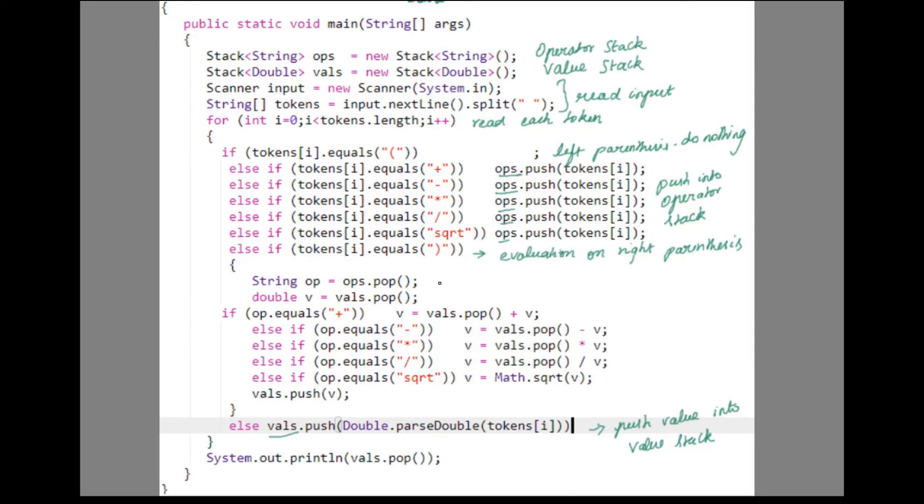In order to evaluate, pop the recent operator. Then you need the values. First pop just one value and store it in the variable v. Then you should have a switch logic or an else if ladder. Because you have to perform a corresponding operation. If it is addition you have to perform addition. If it is subtraction you have to perform subtraction.